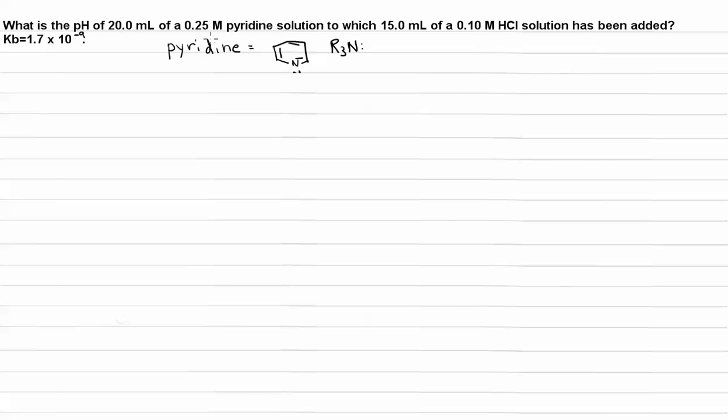So let's determine how many moles of pyridine we have. We have 20 milliliters of pyridine solution. There's 1,000 milliliters in a liter. And the pyridine solution is 0.25 molar. So that means for every one liter, there's 0.25 moles of pyridine. So our number of moles of pyridine, 0.005.